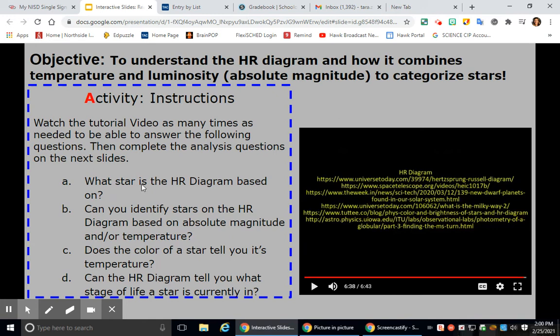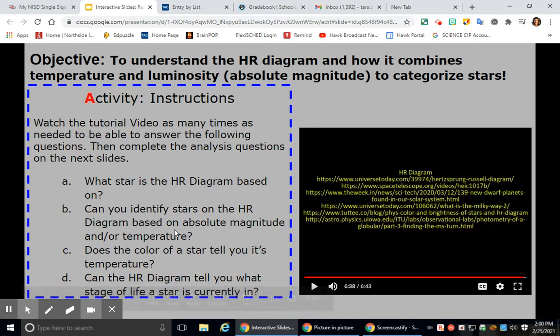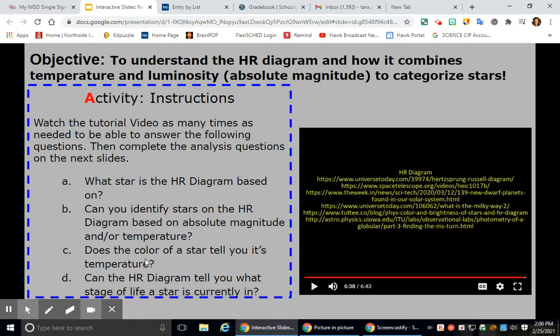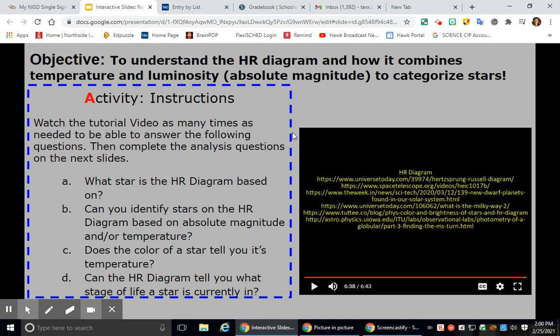Okay, so what star is the HR diagram based on? Our sun. Can you identify stars on the HR diagram based on absolute magnitude and or temperature? Yes, you can graph stars based on both of those. Does the color of a star tell you its temperature? Yes. Okay, red stars are cool. Blue stars are hot. Can the HR diagram tell you what life stage a star is currently in? Yes, because they're grouped based on their age.